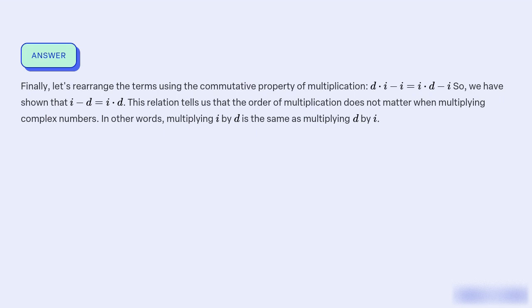We have shown that i² − i equals i·d. This relation tells us that the order of multiplication does not matter when multiplying these complex number expressions. In other words, multiplying i by d is the same as multiplying d by i.